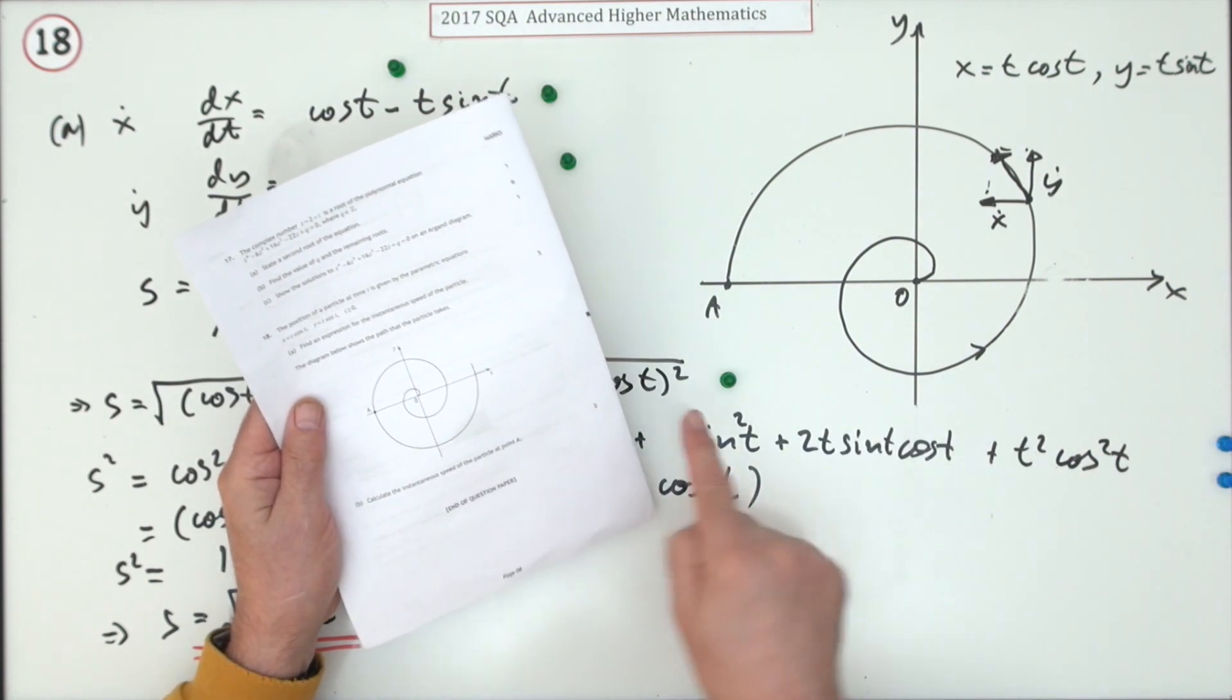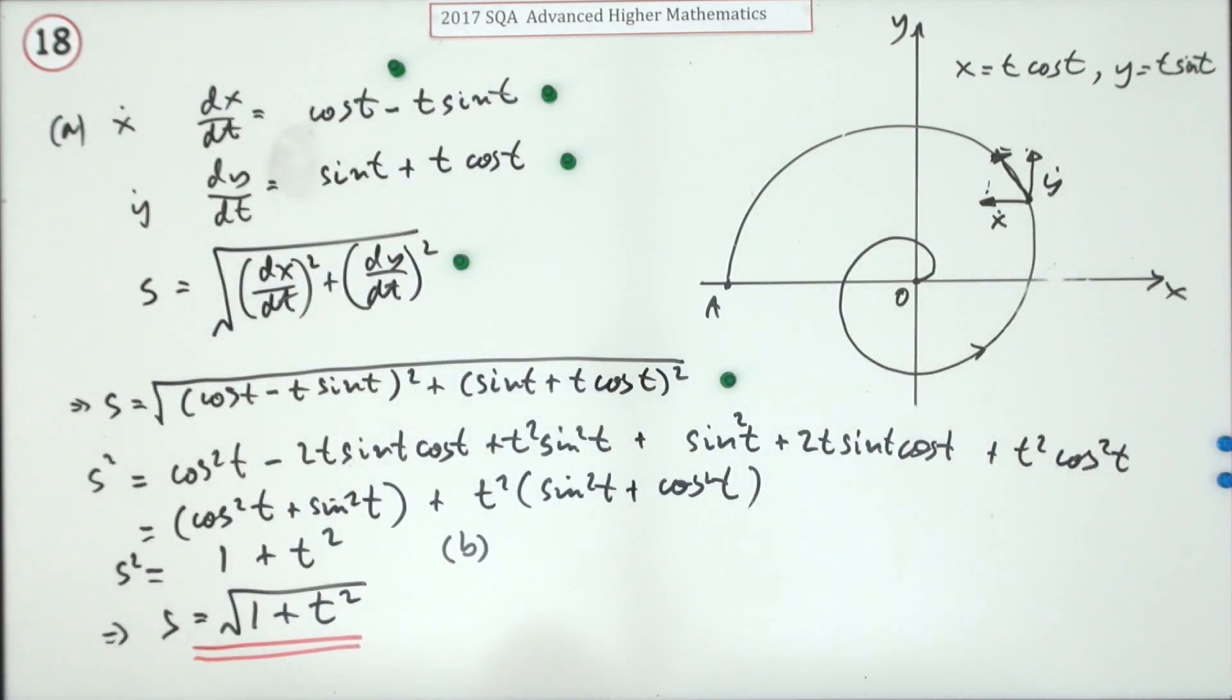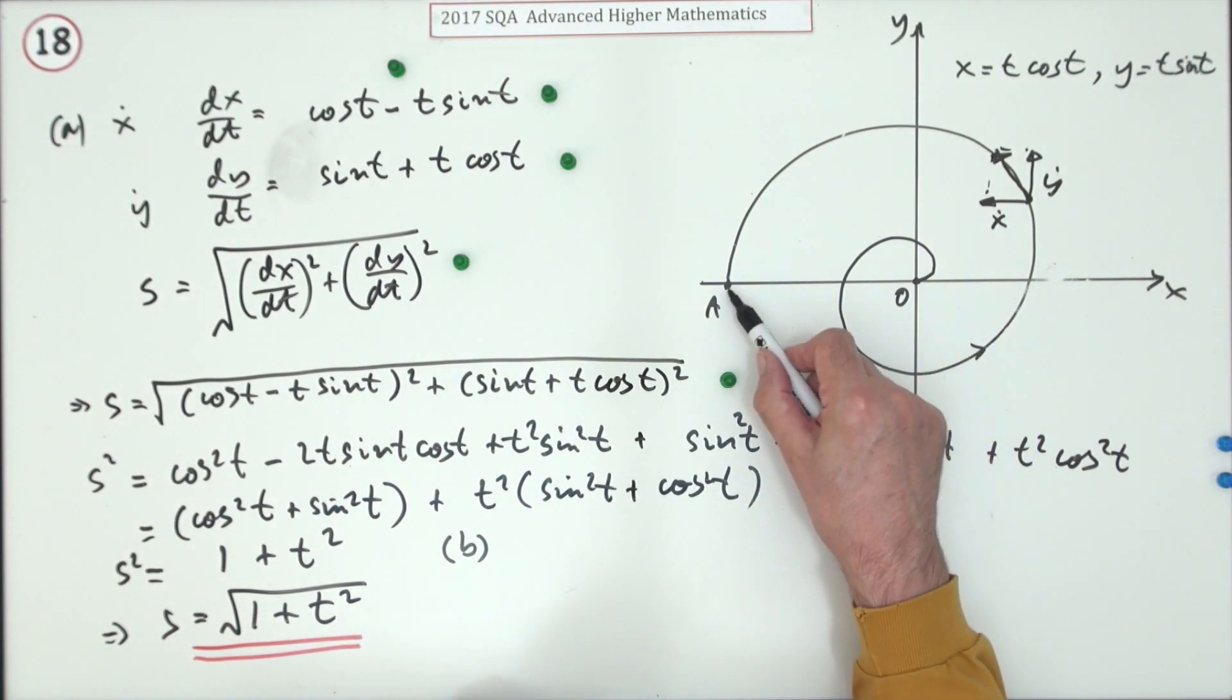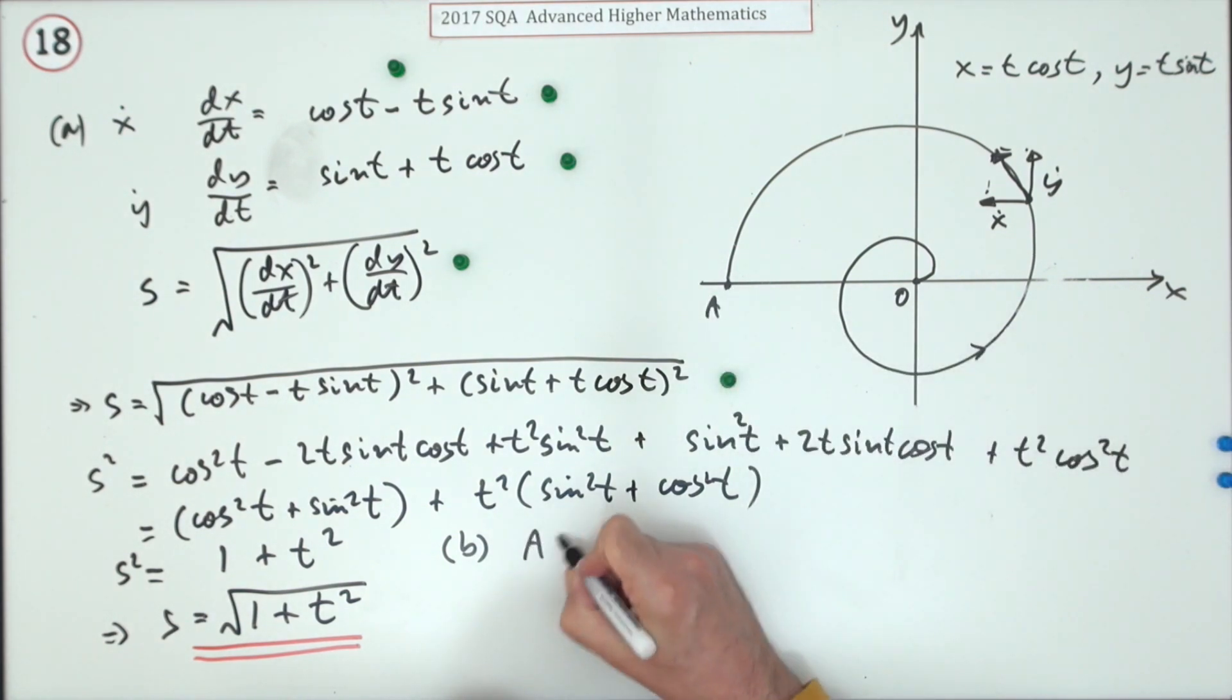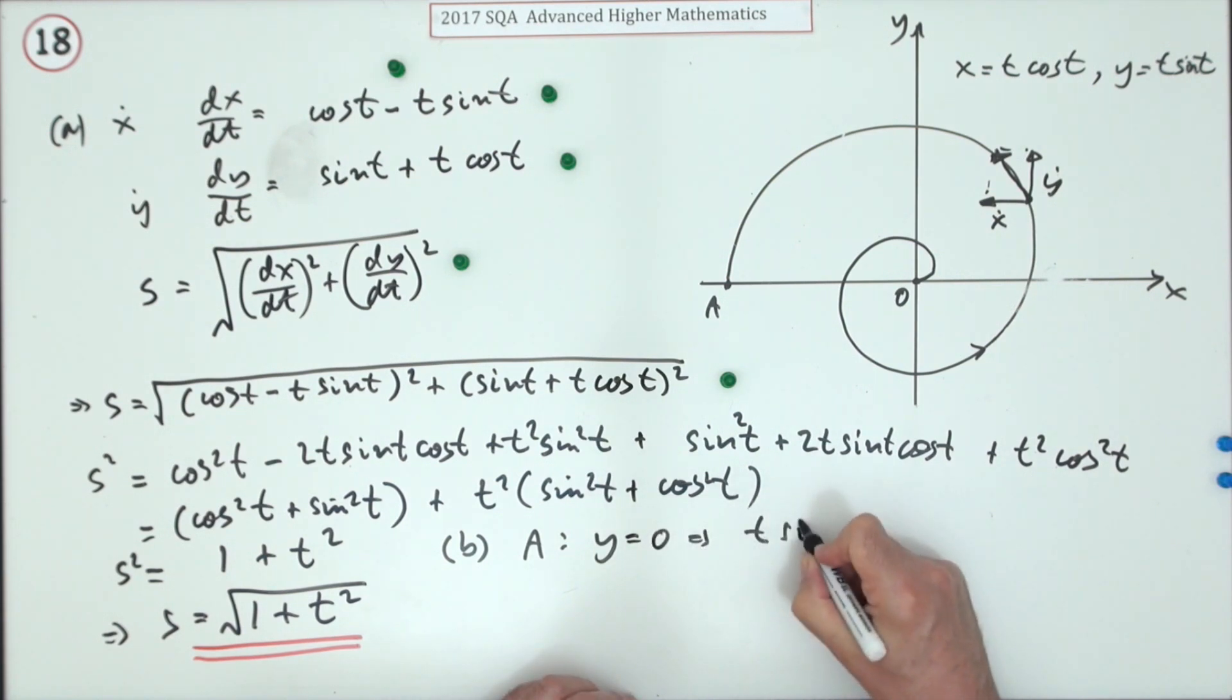Part B, for two marks: What's the instantaneous speed of the particle at point A? Well, you just need to know what's the value of t there. Well, what do you know about the point A? There's something that identifies it quite readily. It's on the x-axis, so I know that at A, y is equal to zero, which means t sin t equals zero.